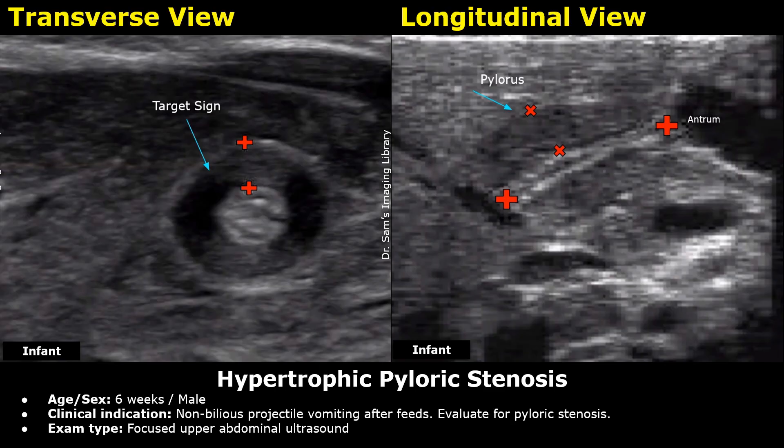Hello everyone, this is Dr. Sam and today we will learn how to write ultrasound reports regarding gastric pathologies. We will look at sample reports of common stomach pathologies examined on ultrasound. The reports will be about hypertrophic pyloric stenosis, H. pylori gastritis, gastric bezoar, and gastric ulcer. You will learn how to write the findings and the impression for these cases. Let's start with our first report, which is about hypertrophic pyloric stenosis.